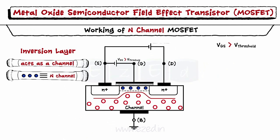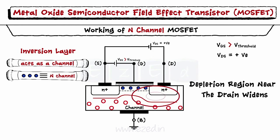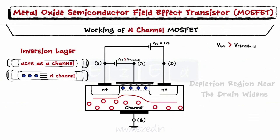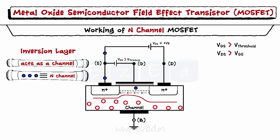Now, let's apply a positive voltage to the drain, which is N-type. When we apply positive potential to the drain, the depletion region near the drain widens due to the reverse biased P-N junction. As we increase this drain voltage above the gate voltage applied, electrons from the channel feel a strong force of attraction towards the drain and start flowing from the source to the drain through the channel. This motion generates the drain current, which flows from the drain to the source.